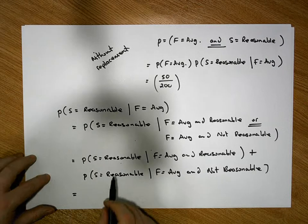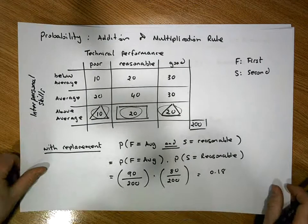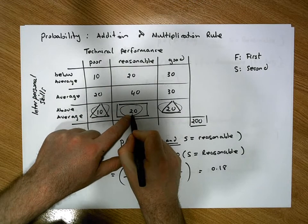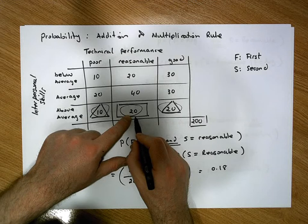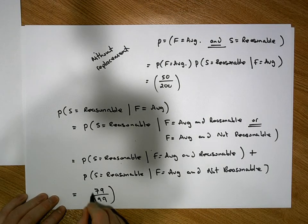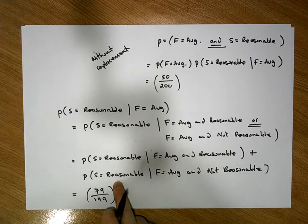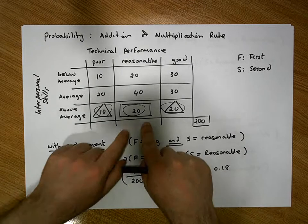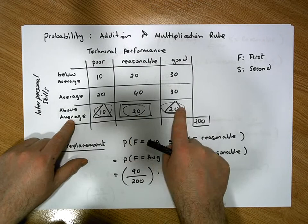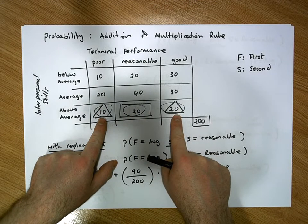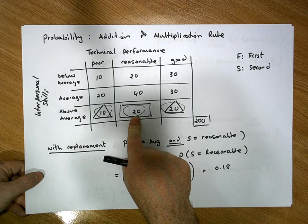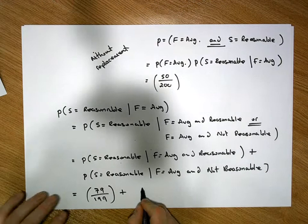The probability that the second is reasonable, given the first was average and reasonable: the first person was in that overlap group, leaving just 79 reasonable individuals, and there are 199 total to choose from, giving 79/199. The probability that the second is reasonable, given the first was average and not reasonable: the full complement of 80 reasonable individuals remains, and there are still 199 to choose from, giving 80/199.